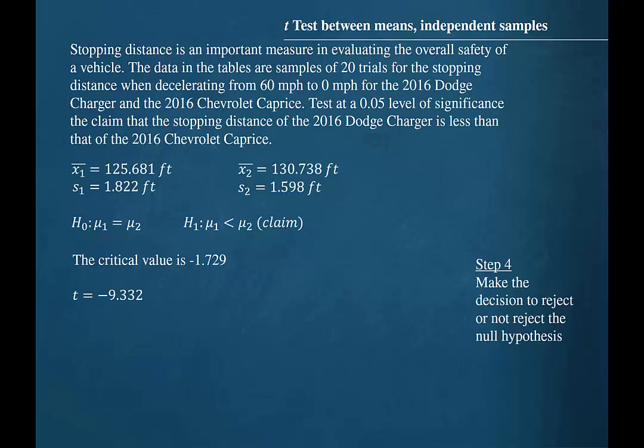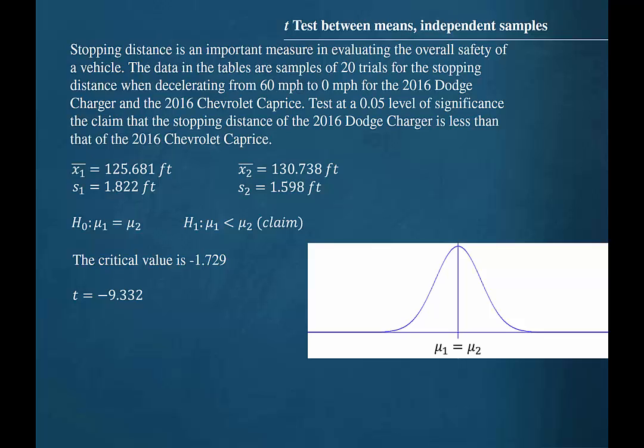Step 4 is to make the decision to reject or not reject the null hypothesis. It is always a good idea to visualize the orientation of the critical values and the test value by placing them on a graph of the hypothesized distribution. We have a normally shaped sampling distribution and we are assuming that the population means are equal. If the test value lands to the right of the critical value in a left-tailed test, we do not reject the null hypothesis.